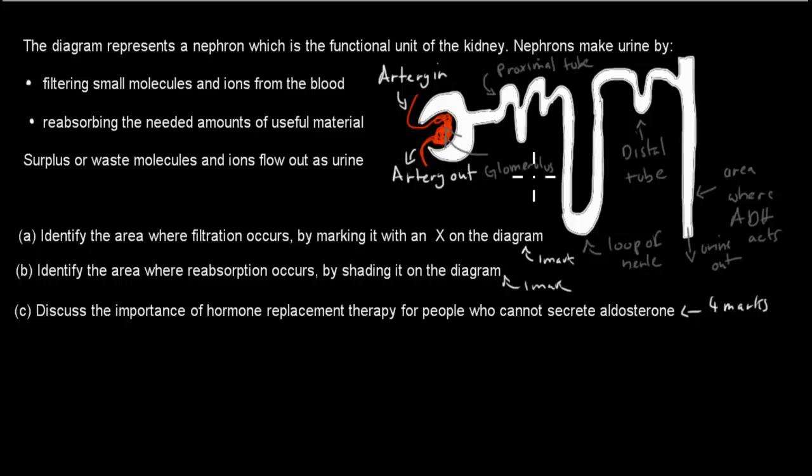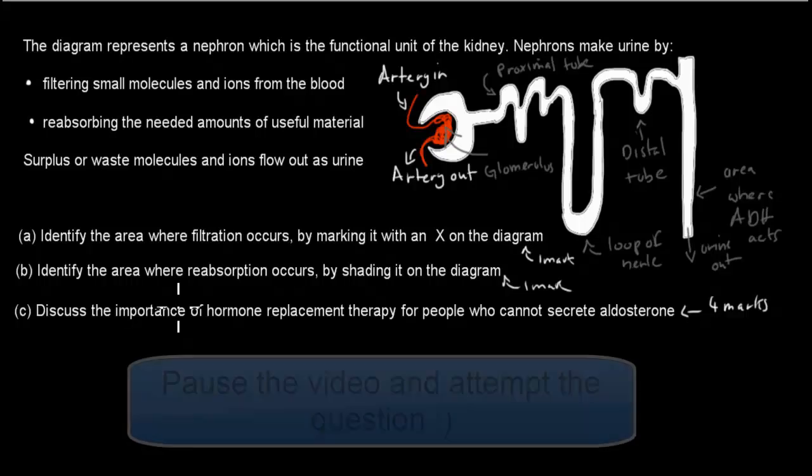And this says: artery in, artery out. Here is an arrow pointing to the red thing, which is the glomerulus. Proximal tube, Loop of Henle, the distal tube here, the area where ADH acts which was here, and urine out there. And this was all given in the exam question. So pause the video and attempt the question when you're ready, and then press play once you've done that.